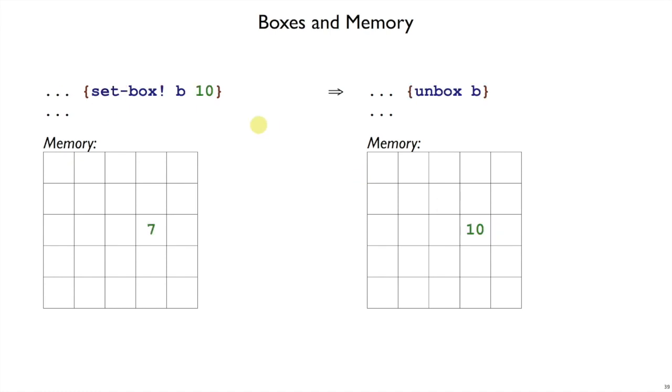Similarly, when there's a set box, we communicate to the interpreter the current picture of memory, which maybe has a 7 at the cell for B, and then as the interpreter does a set box, it produces this new view of memory, which it communicates to the rest of the program's interpretation, so that if there's an unbox, then it knows to get the 10 out of the box, because it has received this communication of the memory picture.